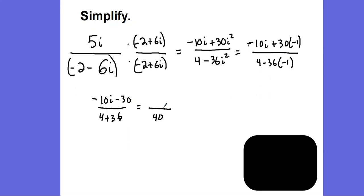So we have negative 10i minus 30 over 40. This could be simplified. We can factor out a 10 from our negative 10i minus 30.